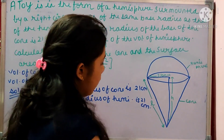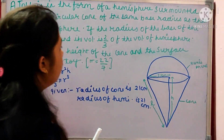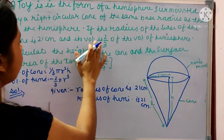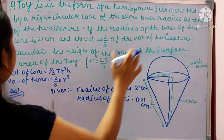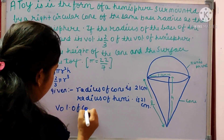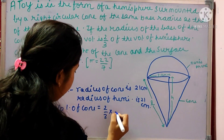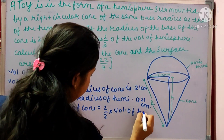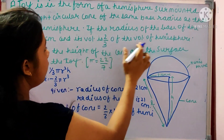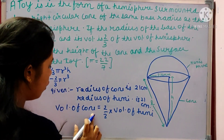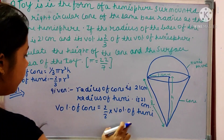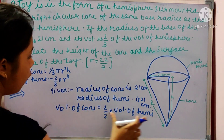Now, apart from this, we have the height of the cone. The volume of cone is 2 by 3 of that of the hemisphere — as mentioned in the question. So: volume of cone equals 2 by 3 of volume of hemisphere. We need to know the formula for volume of cone and volume of hemisphere, then put the values to find the height h.